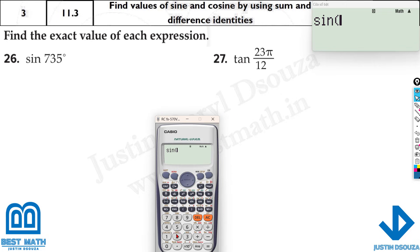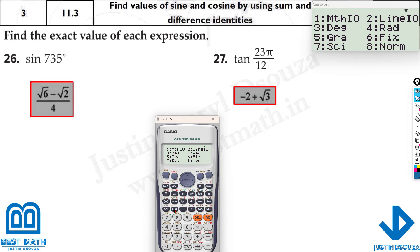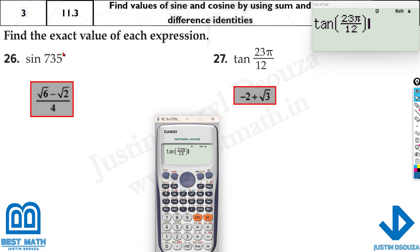And now here we have sine 735. Very simple. But what about this here? Tangent. We have 23 pi. Shift and pi over here. Divided by 12. And make sure it's in radian mode. Because we have pi. Whenever there's pi, it's radian. If this degree is not there, it means it's in radian. And it's minus 2 plus root 3.